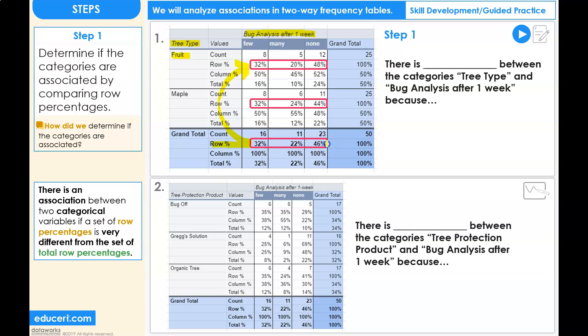Comparing the total row with the maple group, 32 to 32, 24 to 22, 44 to 46. Once again, these three percentages match up very close.